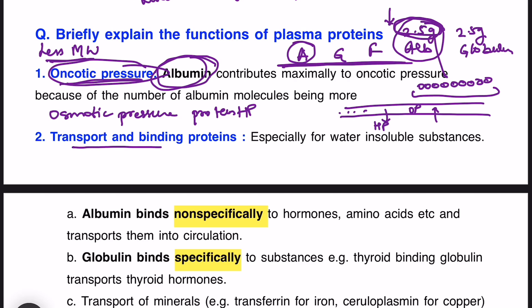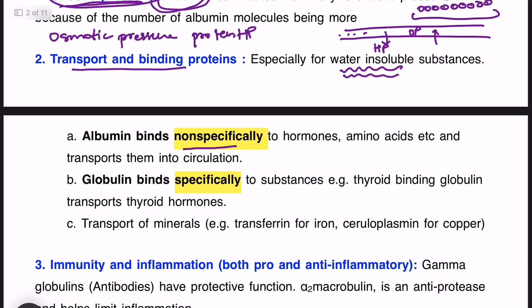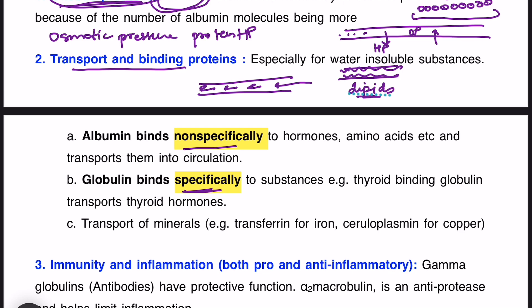The next function is transport and binding proteins. These proteins bind with water-insoluble substances and help in their transport. Albumin binds non-specifically — meaning it can bind to any substance such as hormones and amino acids, not a lock-and-key phenomenon. Globulin binds specifically, meaning for a particular substance there is a particular globulin. For example, thyroid-binding globulin transports only thyroid hormone, and steroid-binding globulin transports only steroid hormones.